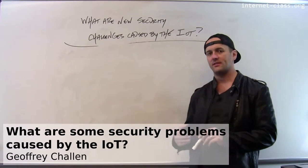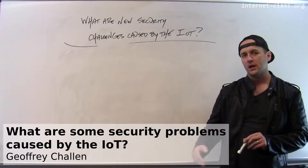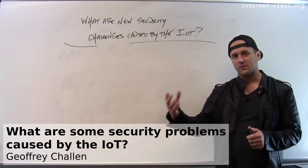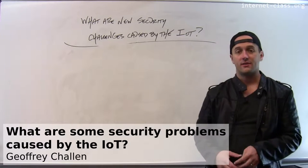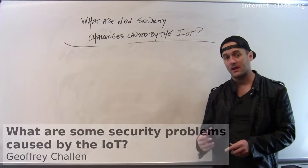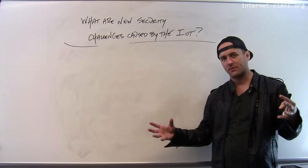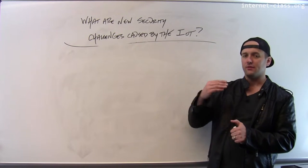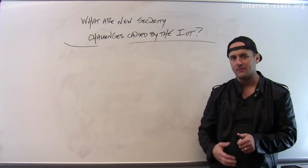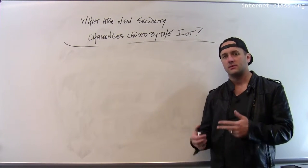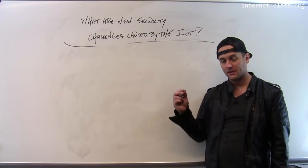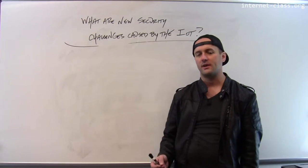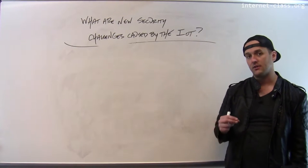Bringing IoT devices online creates new opportunities for them to share data with each other and to interact in more of a distributed way. There's a lot of excitement about trying to take vision-based computing, combine it with the Internet, and bring a lot of these new devices into the environment and connect them to the Internet. However, this also creates new ways for people to attack those devices and exposes new security flaws.